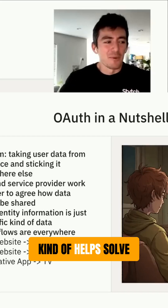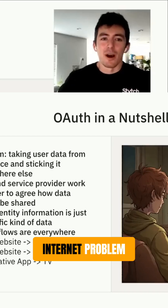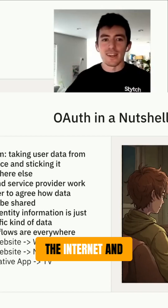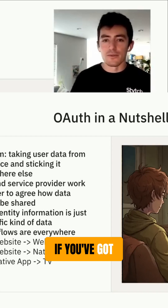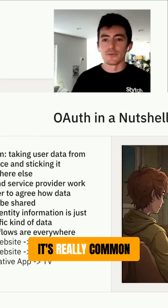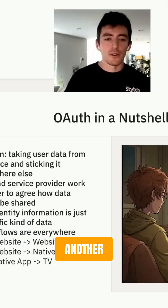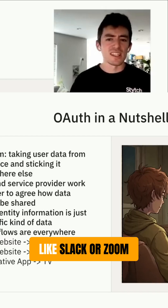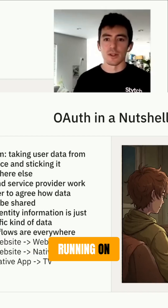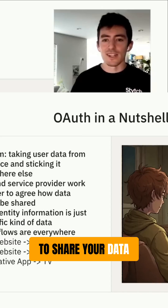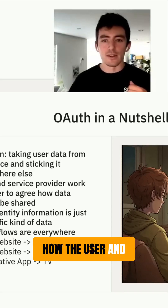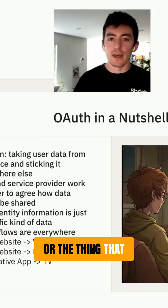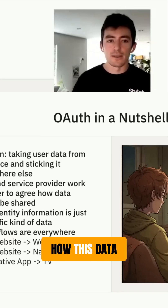OAuth helps solve this general internet problem of taking user data from one place on the internet and sticking it somewhere else. This happens all over — if you've got multiple websites, it's really common to share your data from one website to another, from a website to a native app like something running on your computer like Slack or Zoom, or something running on your phone. It's also common to share your data to devices like televisions. OAuth is about how the user and the service provider — the thing that owns the data — work together to agree on how this data should be shared.